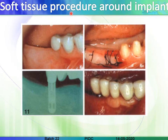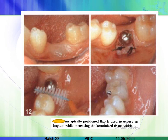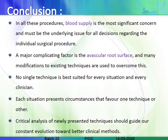The last part of the lecture covers soft tissue procedures around the implant, to be dealt with in more detail in the last lecture. In one case, a horizontal ridge defect with decreased width of attached gingiva was addressed using a free gingival graft, increasing the attached gingiva width after implant placement. In another case, an apically positioned flap was used to expose an implant while increasing the keratinized tissue.